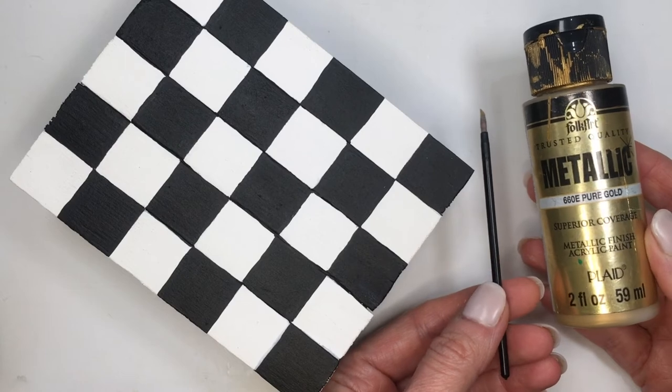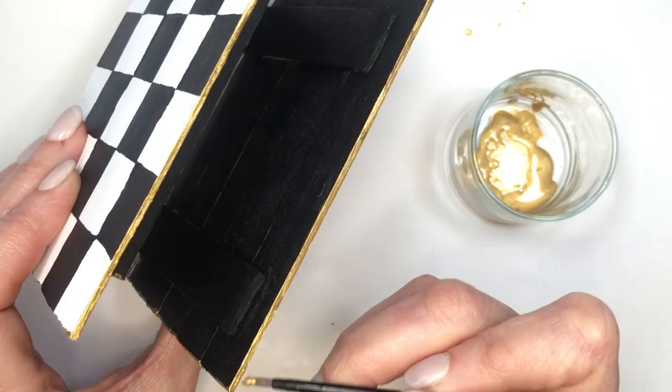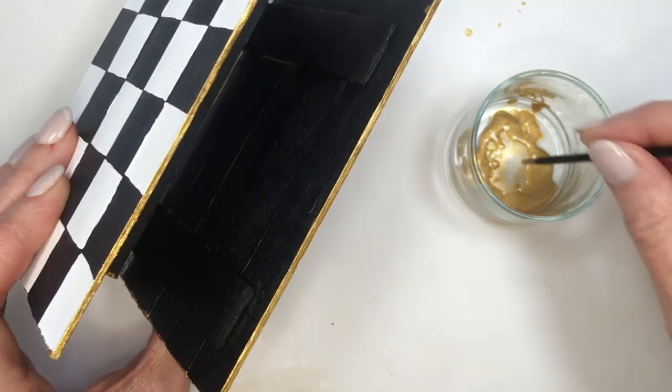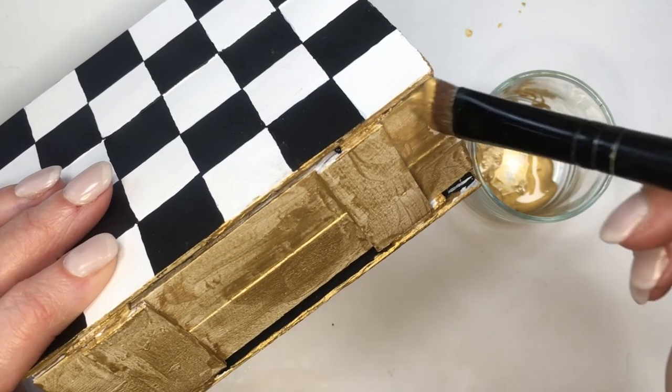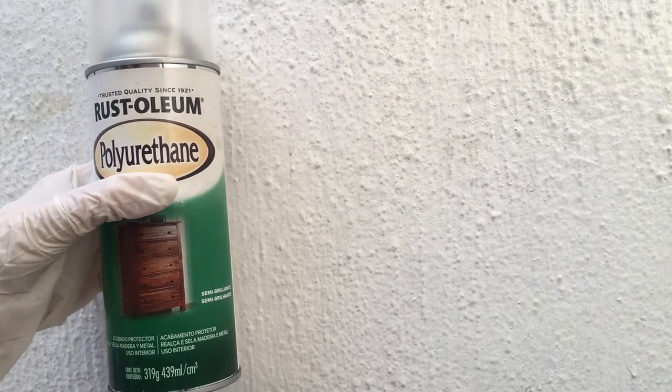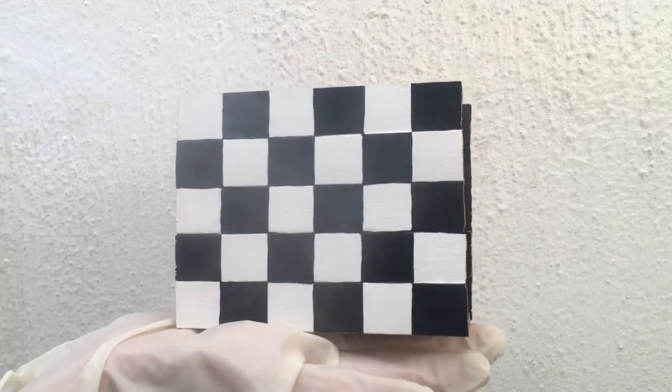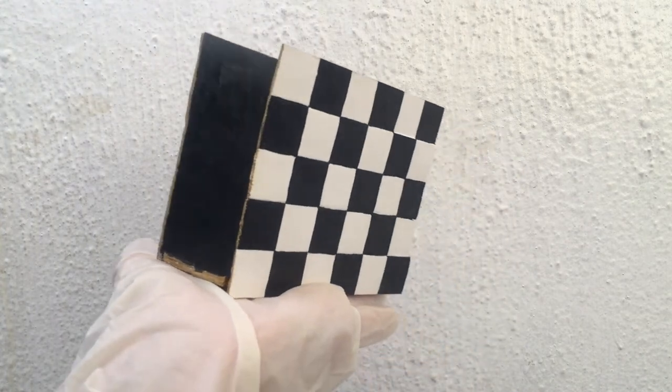Then I'm going to be using the same sponge brush with my gold acrylic paint, and I'm just going to be painting the edges of this, and then I painted in gold the bottom part as well. I'm going to be taking some gloss that I bought at home, working outside, wearing my gloves, and just giving this two coats and letting it dry between coats.